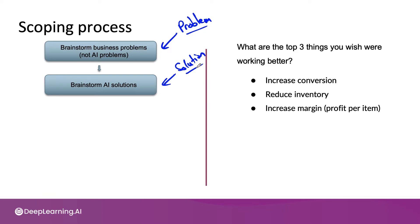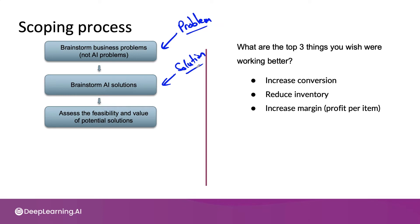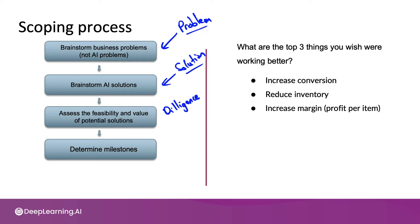After brainstorming a variety of different solutions, I would then assess the feasibility and the value of these different solutions. Sometimes you hear me use the word diligence to refer to this phase. Diligence is a term that comes from the legal field, but it basically means double-checking if an AI solution really is technically feasible and valuable. After validating technical feasibility and the value or ROI — return on investment — of your given project, if it still looks promising, we then flesh out the milestones for the project. And finally, budget for resources.